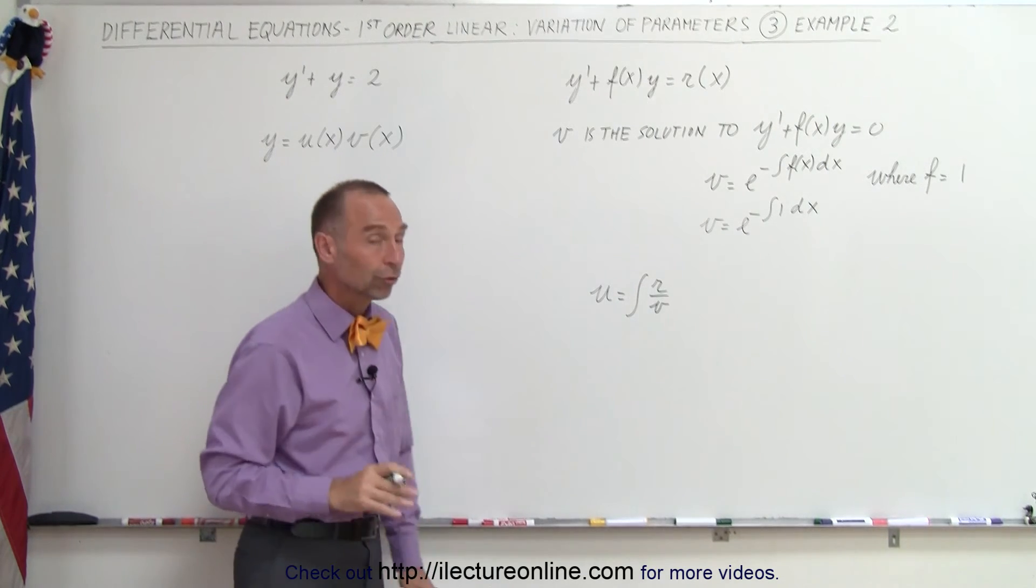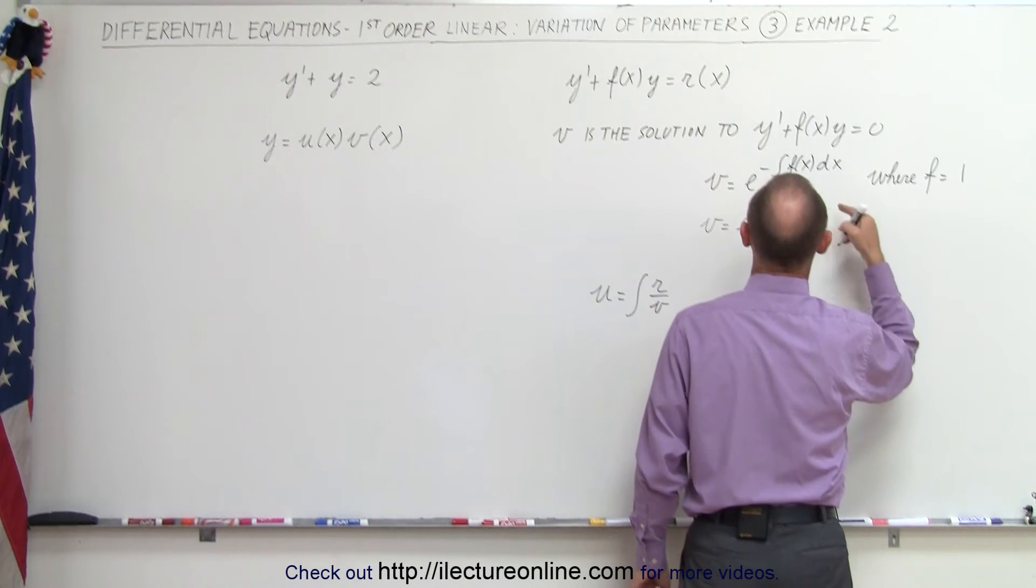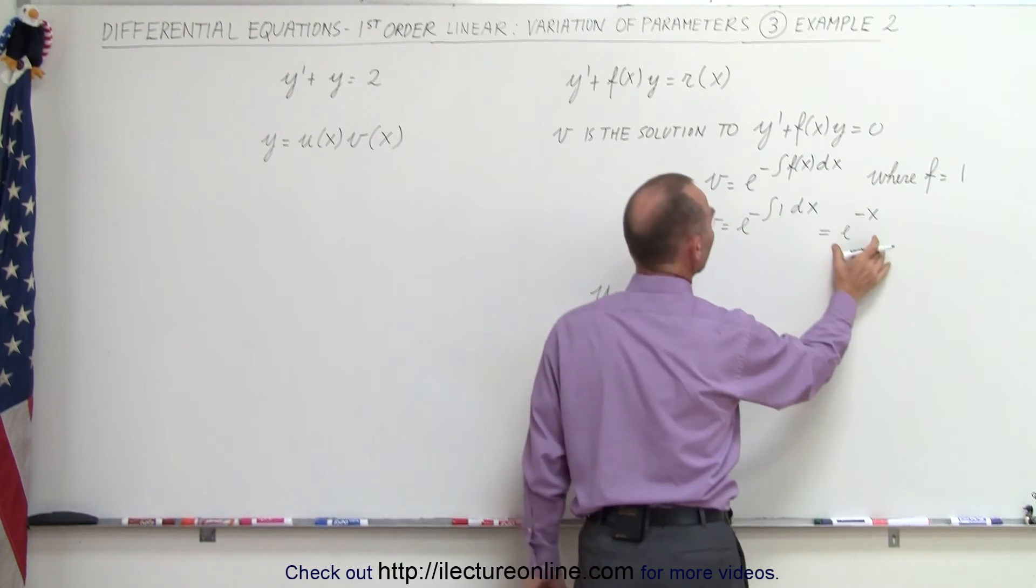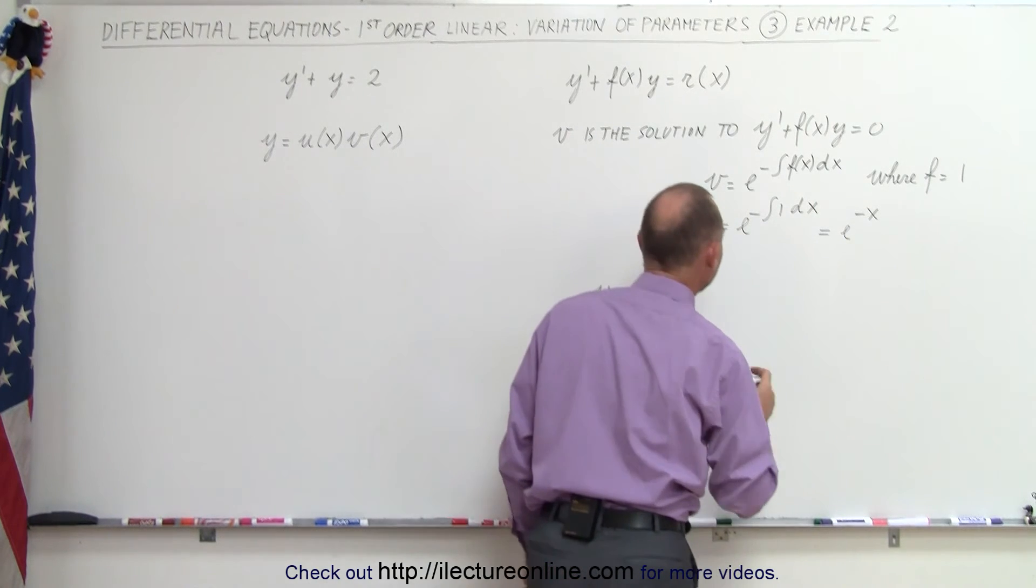So first of all, let's find the solution for v. So v is simply going to be e to the minus dx, so it would be e to the minus x. Minus x right there. So that would be the solution for v, so v is e to the minus x.